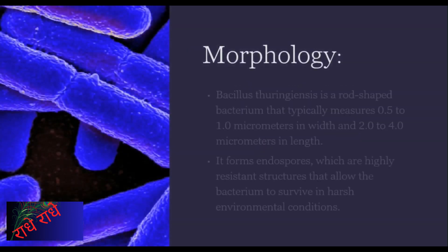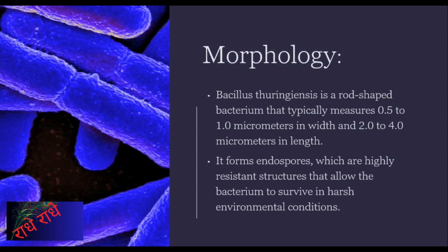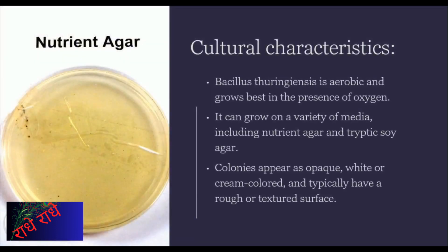Bacillus thuringiensis is a rod-shaped bacterium that typically measures between 0.5 to 1.0 micrometers in width and 2.0 to 4.0 micrometers in length. It is capable of producing endospores, which are special structures that give it an incredible ability to survive in extreme conditions. Colonies of this bacteria typically have a white, opaque, or creamy-colored surface with a rough, textured appearance which gives it the ability to adapt to various settings.